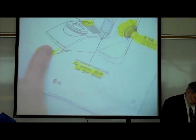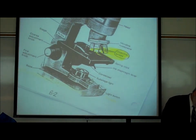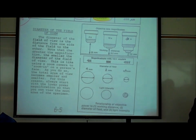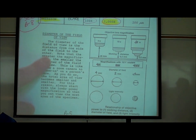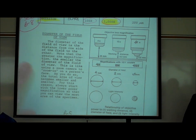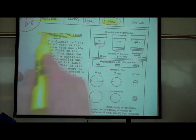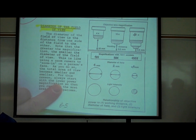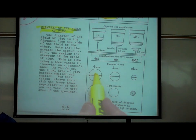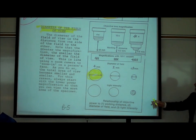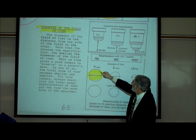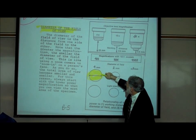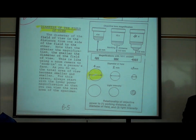Going back to page B5 — what is the diameter of the field of view? With the shortest lens, the scanning objective, you have a lit-up circular field of view. The diameter is the distance from one side of that circle to the other.